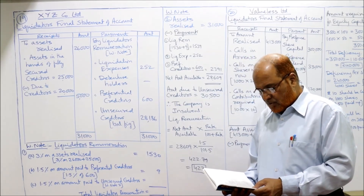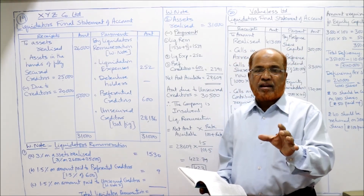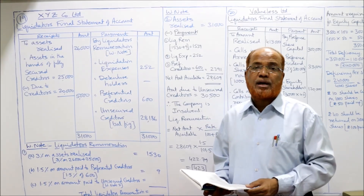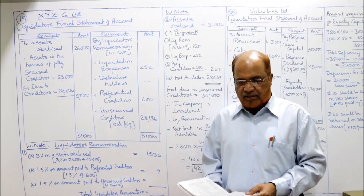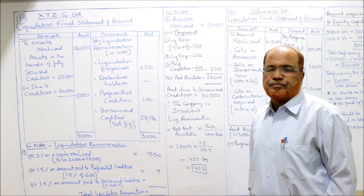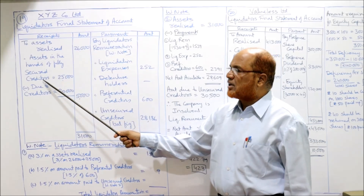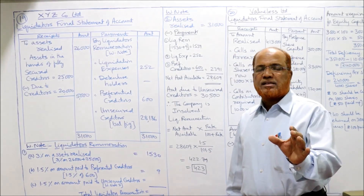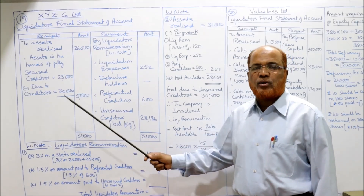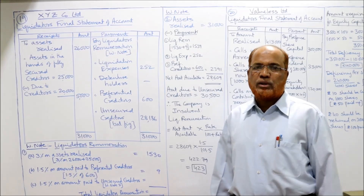The various assets excluding securities in the hands of secured creditors realized 26,000. Apart from that, the security in the hands of fully secured creditors is 25,000 — they realized 25,000, settled their 20,000 claim, and the 5,000 surplus will be handed over to the liquidator. So the liquidator has a total of 31,000 available for payment.